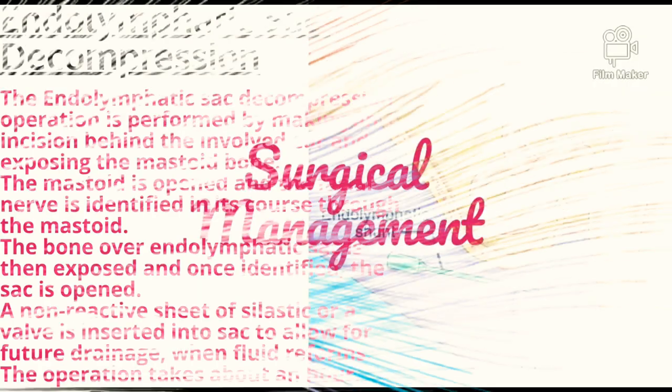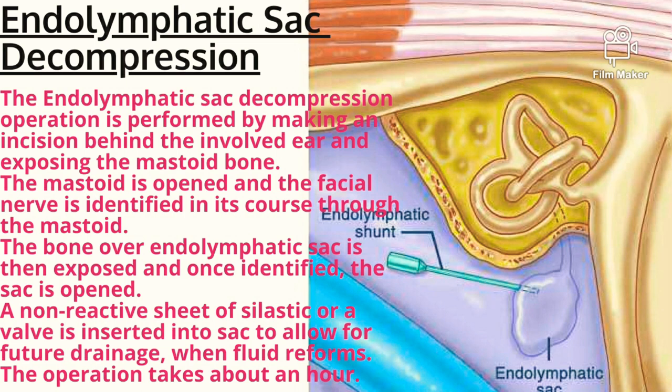What is surgical management? The first is endolymphatic sac decompression. This operation is performed by making an incision behind the inner ear and exposing the mastoid bone. The mastoid is opened and the facial nerve is identified in its course through the mastoid. The bone over the endolymphatic sac is then exposed, and once identified, the sac is opened as seen in the picture. A non-reactive sheet, silastic stick, or valve is inserted into the sac to allow for future drainage. The operation takes about an hour.